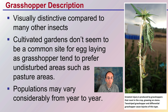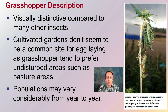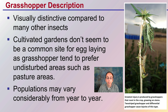Cultivated gardens don't seem to be a common site for egg laying, so if you're growing in a cultivated garden, you may not see as many of them. Grasshoppers tend to prefer undisturbed areas such as pasture areas. If you're growing cannabis on a larger scale, you might have better odds of seeing them, particularly if it's next to a large pasture area.